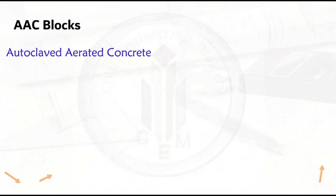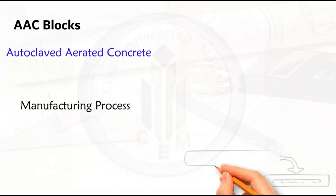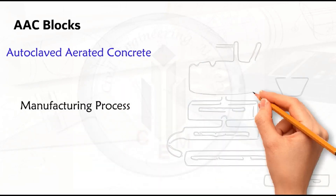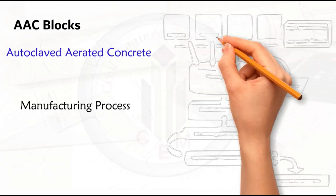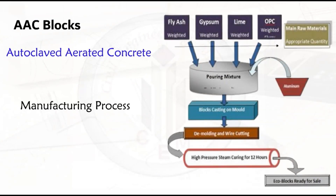Let's look into the manufacturing process of AAC blocks. All the raw materials need to be mixed properly to prepare the mixer. The blocks are then cast in a mold, demolded, and wire cutting is done. Once the blocks are ready, they are cured in high pressure steam for 12 hours. Once this process is completed, the eco-friendly blocks are ready for use.